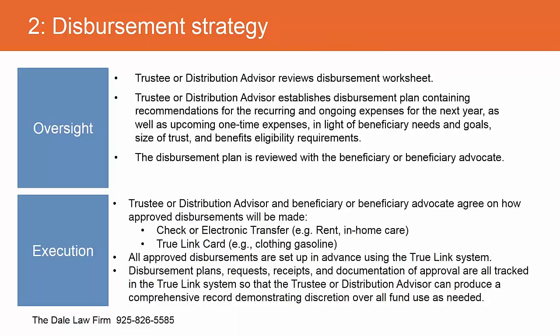There still has to be oversight — there's no such thing as a magic card. If you are a trustee, you still have to have oversight as to what distributions are being made. The trustee or distribution advisor reviews the disbursement worksheet and establishes a distribution plan containing recommendations for recurring ongoing expenses for the next year, as well as upcoming one-time expenses, in light of the beneficiary's needs and goals, the size of the trust, and benefits eligibility requirements. The distribution plan is then reviewed with the beneficiary or the beneficiary advocate.